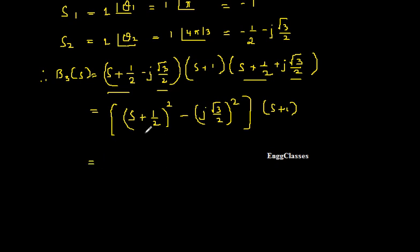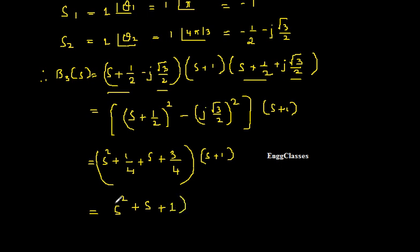Let me simplify this further. It is a plus b whole square: a square S square plus 1 by 4 plus 2ab, I am going to get S. What is this? J square. J square is nothing but minus 1, minus of minus becomes plus root 3 by 2 square, which is 3 by 4. So I just put the bracket for this and later I have S plus 1 as it is. Can I simplify this? Yes. S square plus S plus 1 by 4 plus 3 by 4 is 4 by 4, which is 1. So I get S square plus S plus 1 gets multiplied with S plus 1.